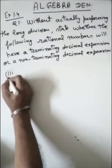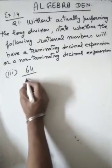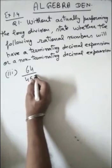Third part of this question is, the given number is 64 upon 455.